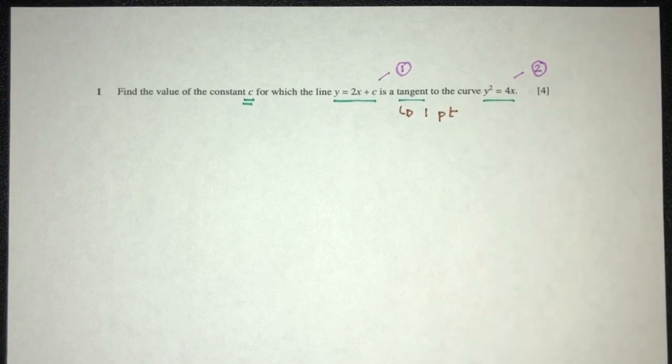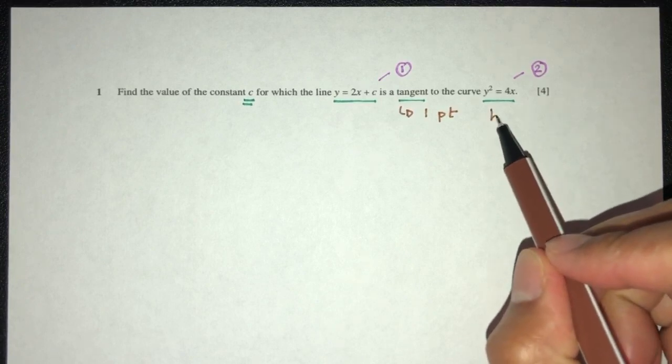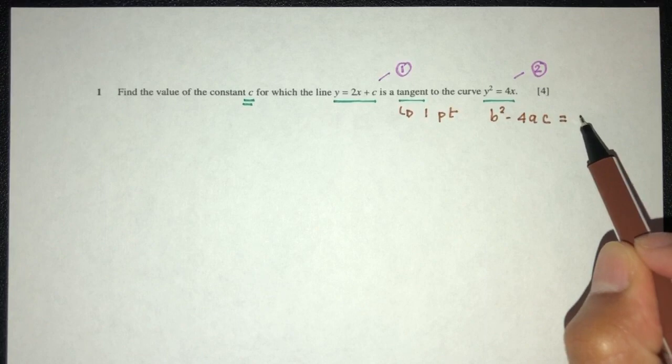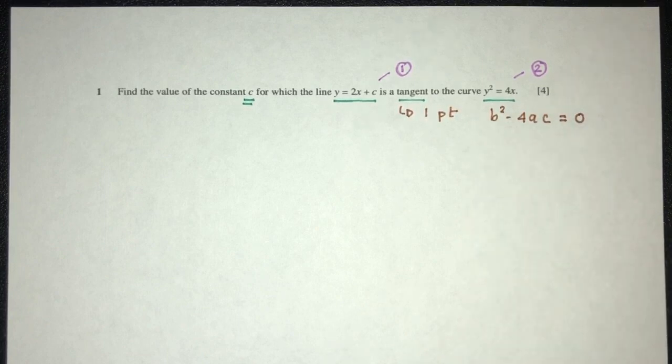We know if they meet or they have only one solution, we know that b squared minus 4ac have to be equal to zero. That's the main thing behind this question.